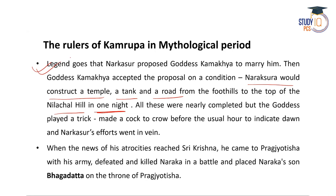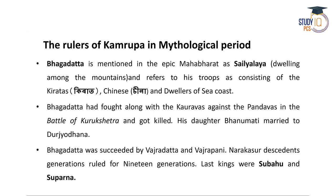When news of Narakasura's atrocities reached Lord Sri Krishna, he came to Pragjyotishpur with his army, defeated and killed Narakasura, and placed Naraka's son Bhagadatta on the throne. There is another legend: when Lord Krishna came to Pragjyotishpur, his horse got tired at a particular place, and a temple known as the Asvaklanta temple was built there. So history and culture are intertwined.